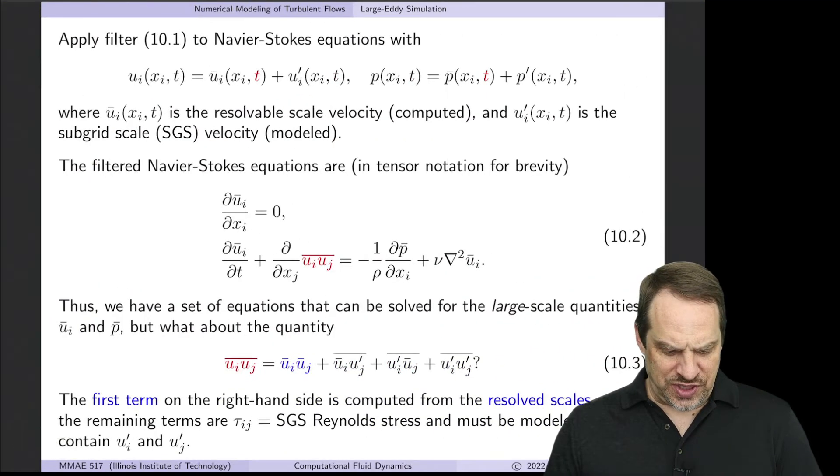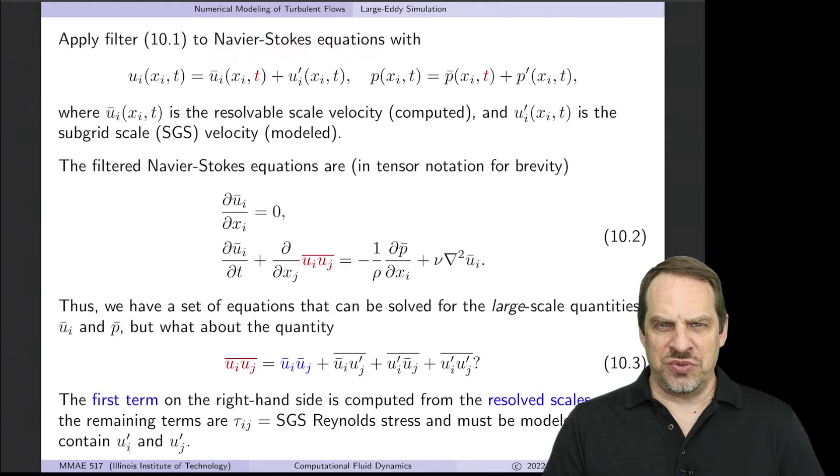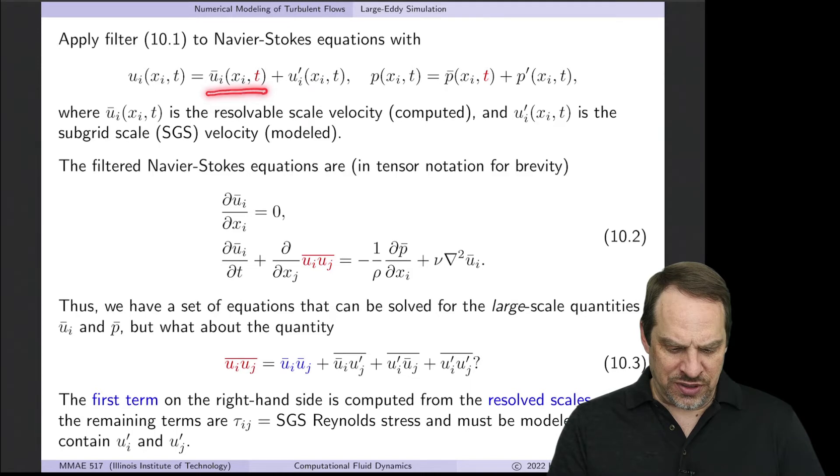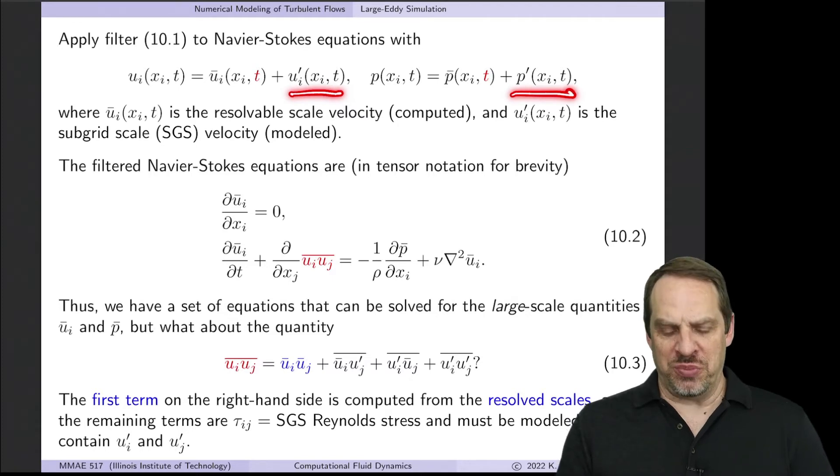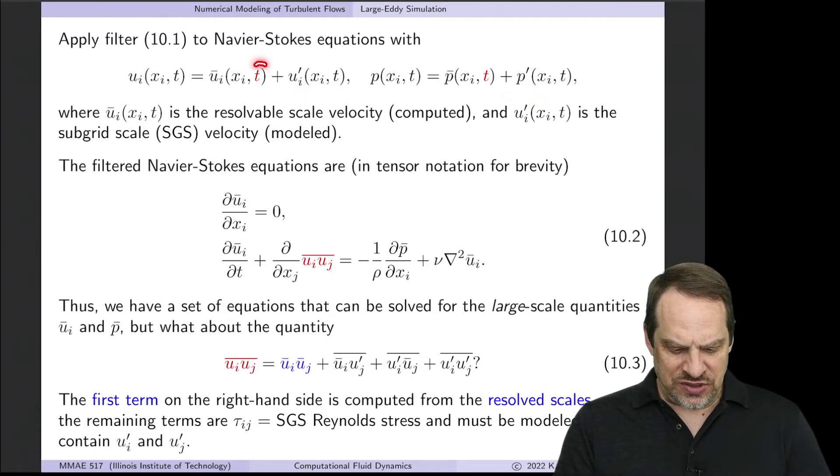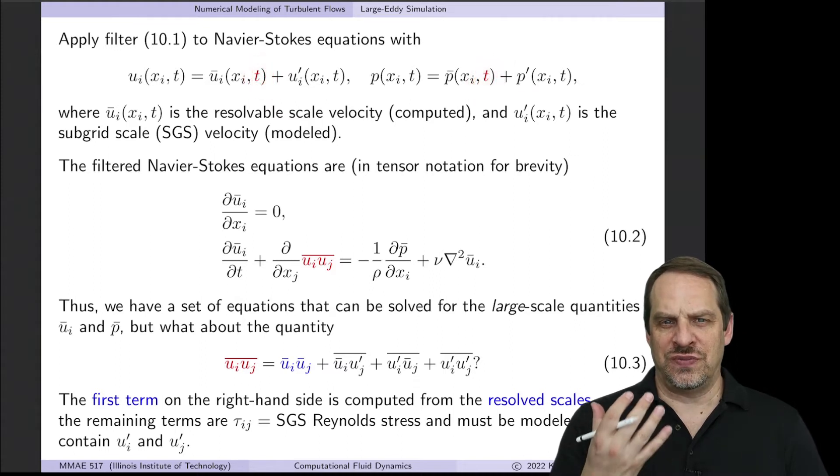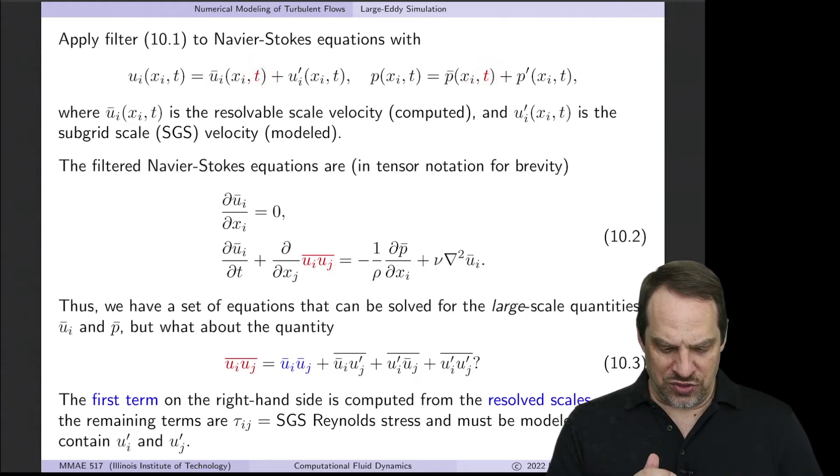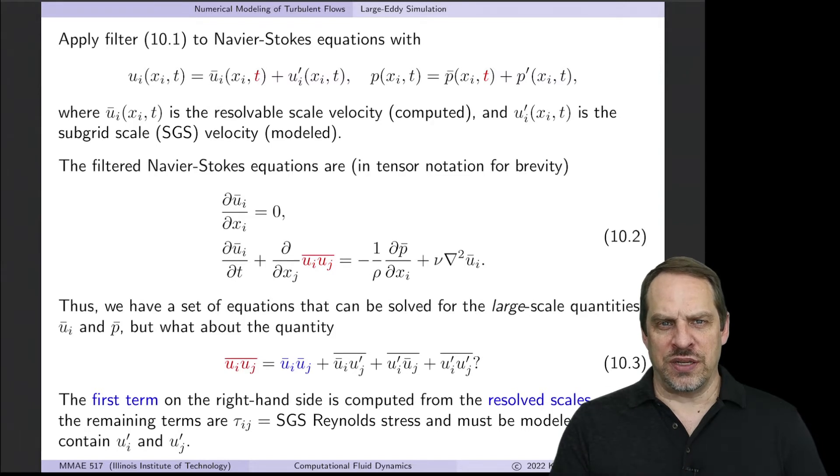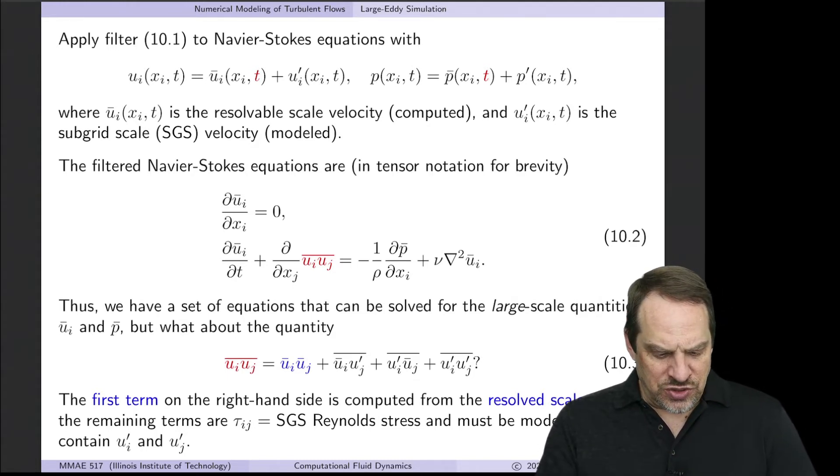Here's how we separate those scales. We take our Navier-Stokes equations and separate the large scale and small scale features. The large scale pressure and velocity are u-bar and p-bar, while the small scales are denoted by primes. I've emphasized that u-bar and p-bar are functions of time—unsteady evolving flows.